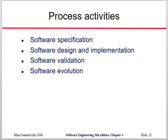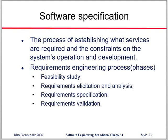The processes of software engineering are software specification, design, implementation, validation, and lastly evolution. In software specification we need to know about feasibility studies.